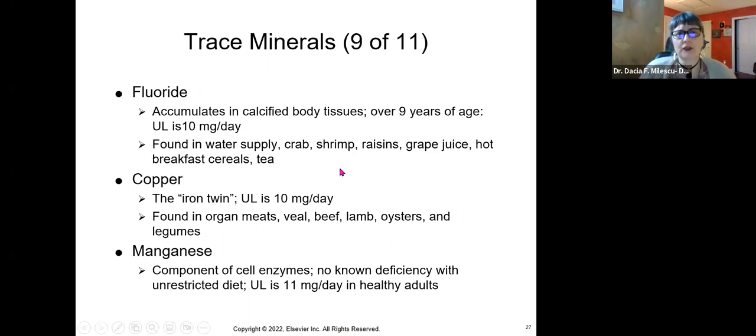Lots of controversy with fluoride, but we do need fluoride. It accumulates in calcified body tissues. So again, you just need the right amount and you'll find it in our water supply. Crab, shrimp, raisins, grape juice, hot breakfast cereals, and tea.